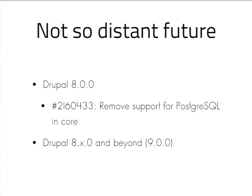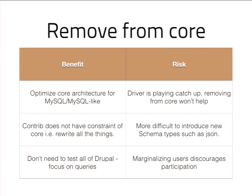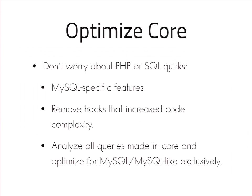Let's look at what it would take to remove PostgreSQL from core — maybe moving it to contrib. One problem with Drupal is our database agnostic approach: we haven't optimized our architecture for MySQL and MySQL-like drivers. We have PHP quirks in our code, like null and default being different in PostgreSQL. We could be using MySQL-specific features, removing the hacks that increase code complexity, and analyzing all our queries to see what we can do better for MySQL and MySQL-like systems such as MariaDB. Backdrop CMS already did this and it wasn't that hard. But we have to ask: when MySQL and MariaDB really start branching in features, what happens then?